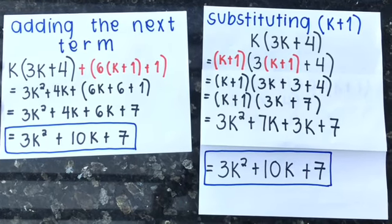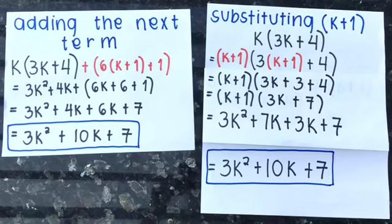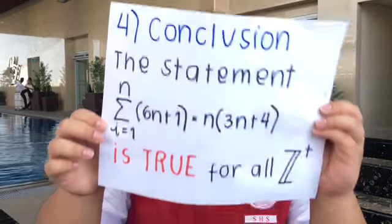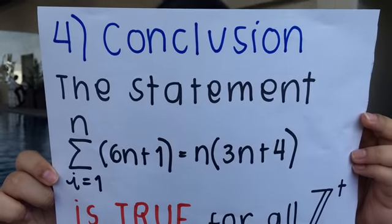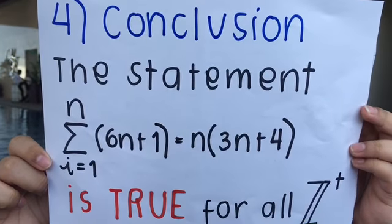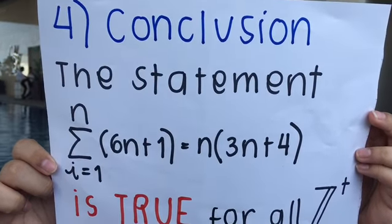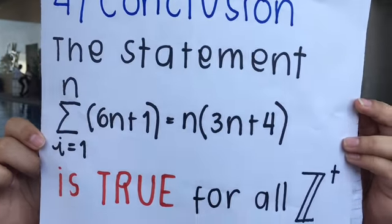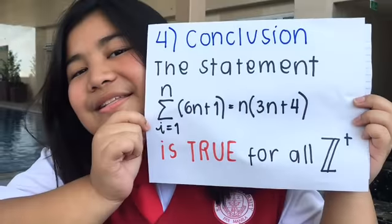Now that we have the same answer for both equations, we can do the fourth step, which is conclusion. For the conclusion, you will just need to write that the statement of summation of 6n plus 1 from i equals 1 to the nth term is equal to n quantity 3n plus 4, is true for all positive integers.